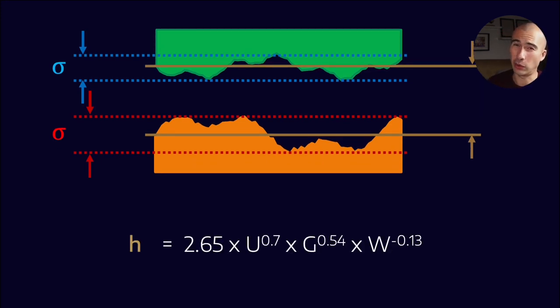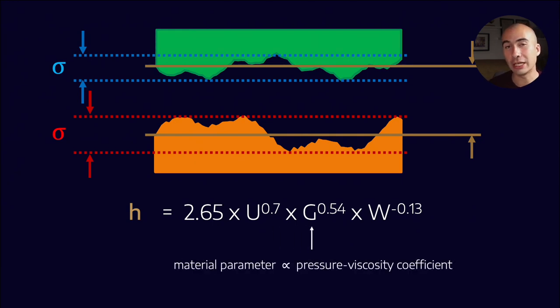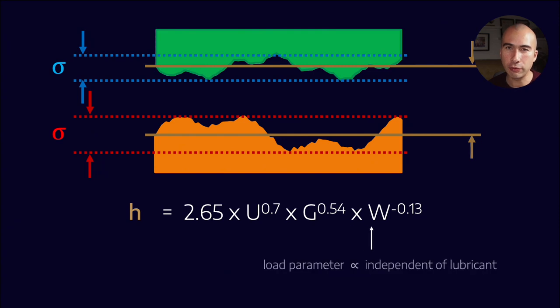Now you don't need to know this, but what you need to know, or what is helpful to understand, is that the coefficients that go in here are related to the absolute viscosity of the lubricant, the pressure viscosity relationship of the lubricant, and then a load factor which is independent of the lubricant. And note that this load parameter w, its power is to the negative 0.13, which means that the film thickness is inversely proportional to the load. And that makes sense. The more load that I put on the lubricant, the thinner that film should get. So intuitively this makes sense.